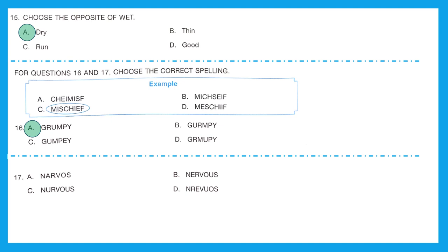Question 17, they are talking about nervous. Are you nervous about your Olympiad exams? No, you should not be. Rather, practice more and be confident. The right answer is option B, N-E-R-V-O-U-S, nervous.